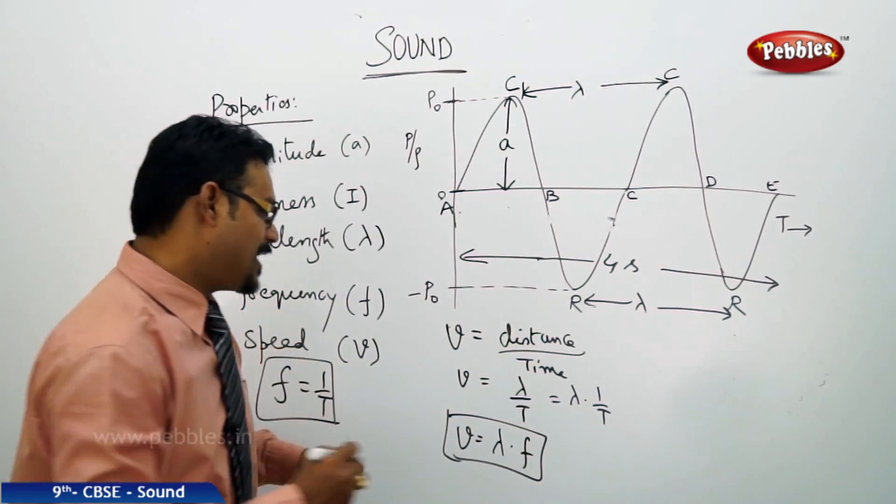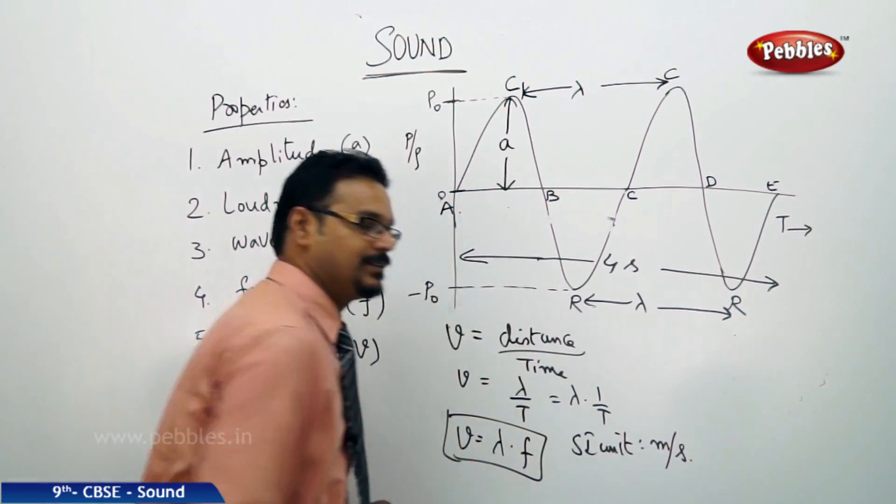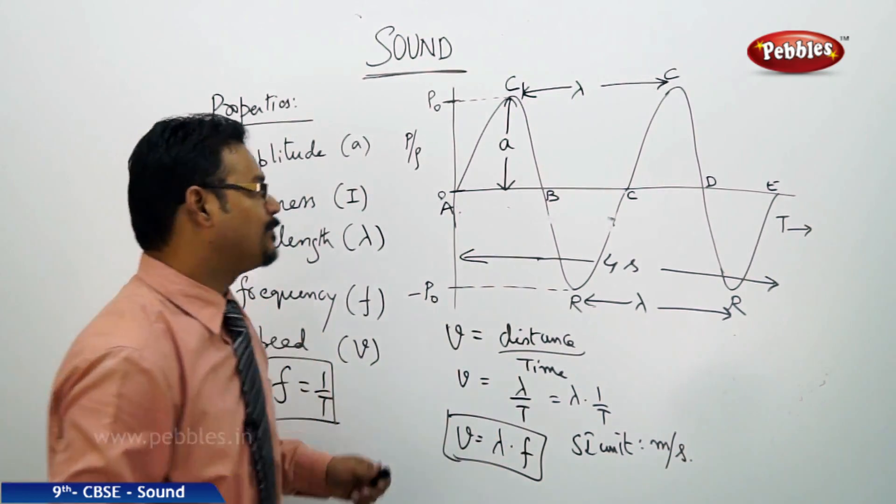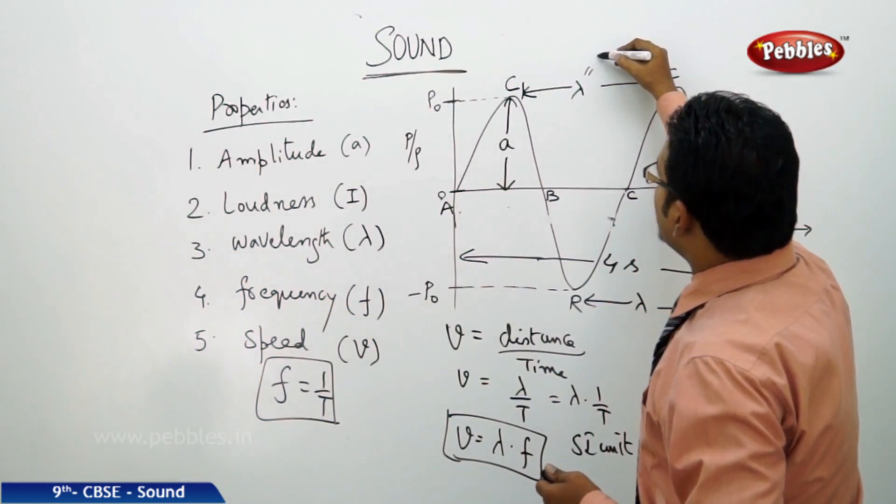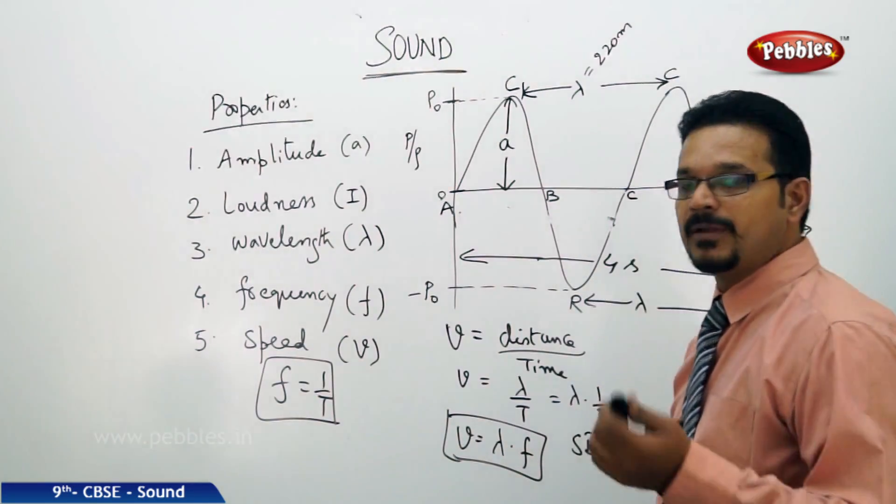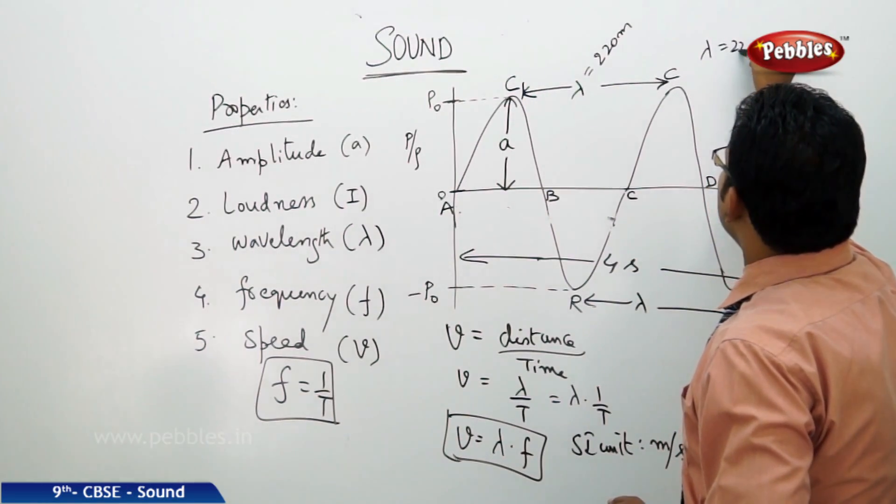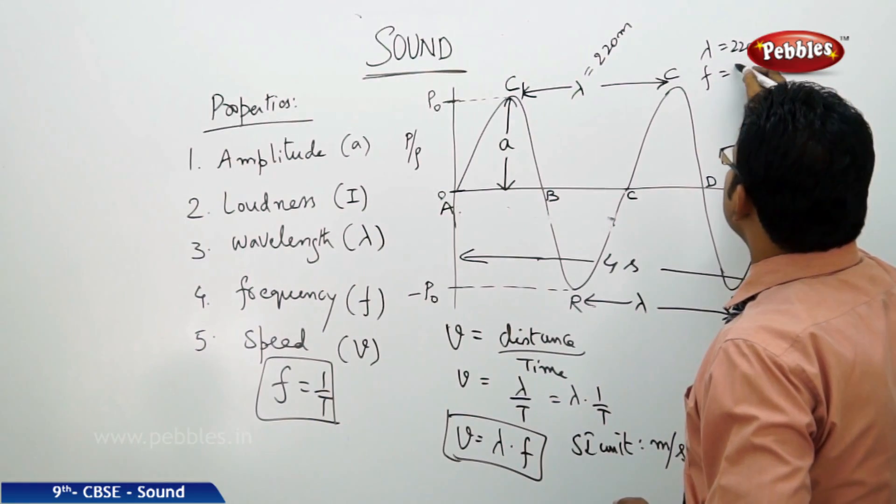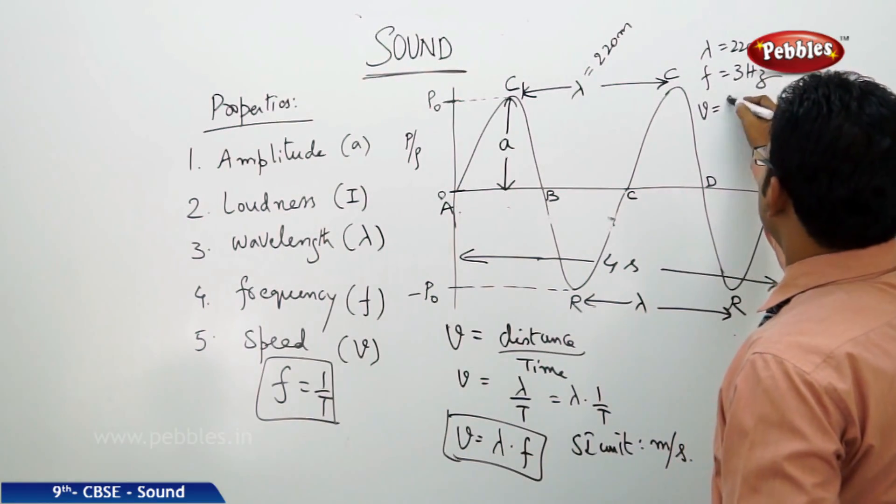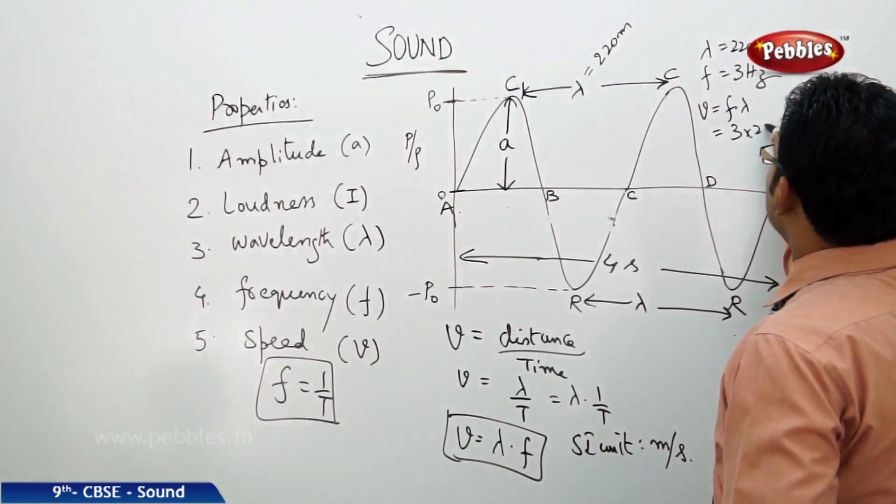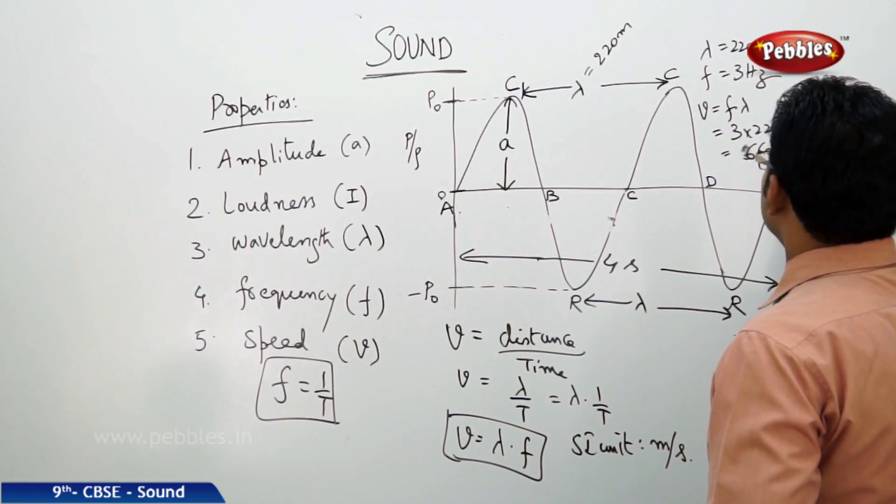It is a very, very important formula. And, you know, the SI unit is just like a motion chapter we discussed. It is meters per second. For example, in this diagram, if I give the lambda value as, say, 220 meters, lambda value. And, the frequency, the frequency, lambda is 220 meters and frequency is 3 hertz. What is the speed of sound, if I ask you? Then, simply apply the formula, F lambda, 3 into 220, the frequency is nothing but 660 meters per second.